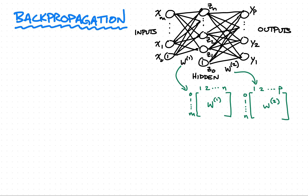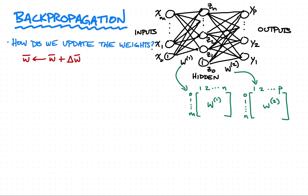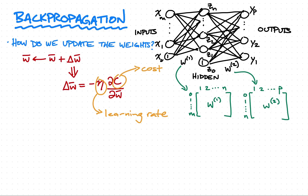The process of backpropagation is essentially answering the question: how do we update these weights? The simplest way to view this is that we've got some array of weights, and the new value of the weights will be based on the current value plus some change — a delta — to each of those weights. That delta is equal to negative eta times the partial derivative of C with respect to the weights. Eta is the learning rate and C is the cost or the error. This process has a special name: it's called gradient descent. The gradient is the derivative, and the negative is what's telling us that we're descending.